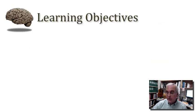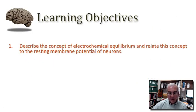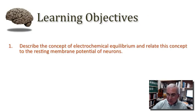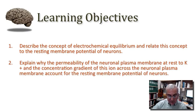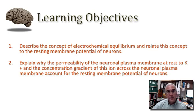We have some learning objectives for today. I want you to be able to describe the concept of electrochemical equilibrium and relate this concept to the resting membrane potential of neurons. I also want you to explain why the permeability of the neuronal plasma membrane at rest to potassium ions, and the concentration gradient of this ion across the neuronal plasma membrane, together account for the resting membrane potential of neurons.